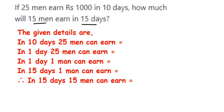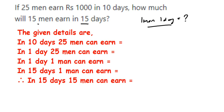We're going to use the unitary method — that is, we're going to find out for one man in one day how much they are earning. Once we have that, we can find out for 15 days and 15 men. We'll go through the statements in sequence.